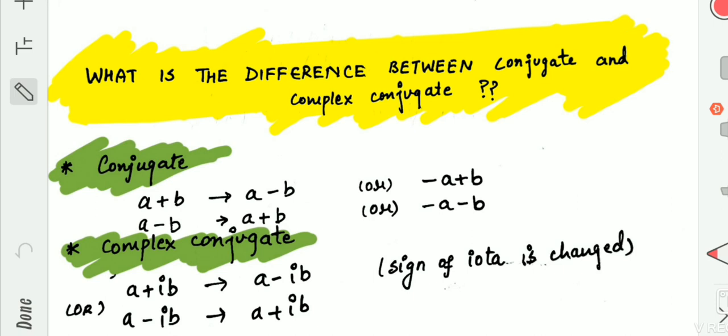the conjugate of a+b could be a-b or -a+b. Simultaneously, you cannot change the sign of both of these terms. In the same way, the conjugate of a-b will be a+b or -a-b. In this, we have changed the sign of b, and in this, we have changed the sign of a.